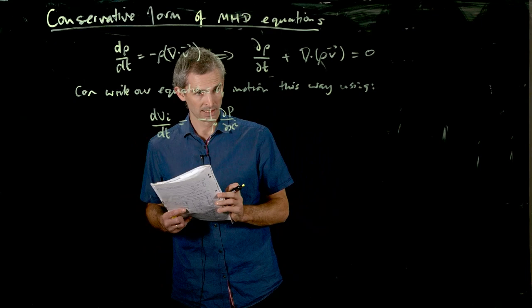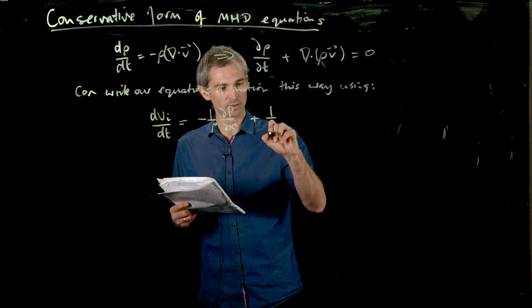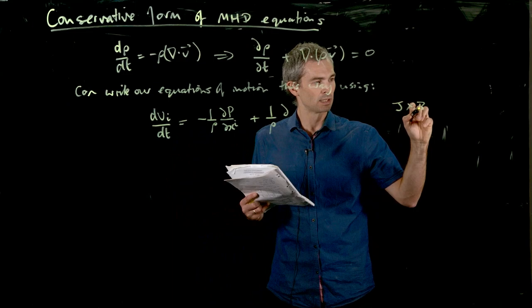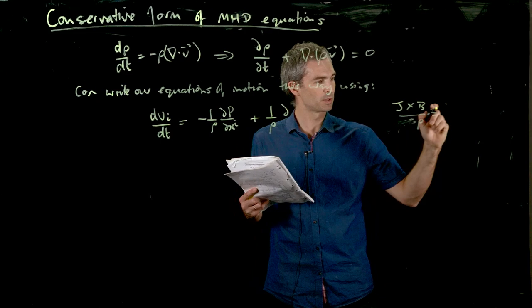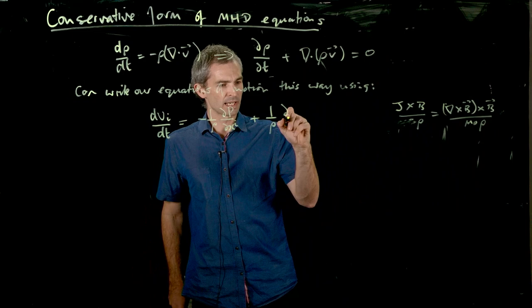So the i is just a tensor index again. So this is just a grad p in vector notation. And then we can write the magnetic terms, which is just to remember, it was just a j cross b on rho, which is equivalent to the curl of b cross b on mu naught rho.